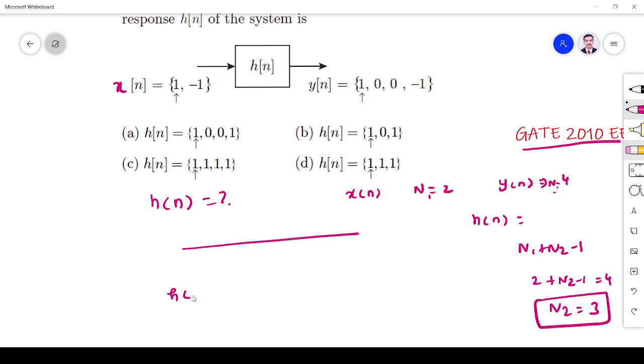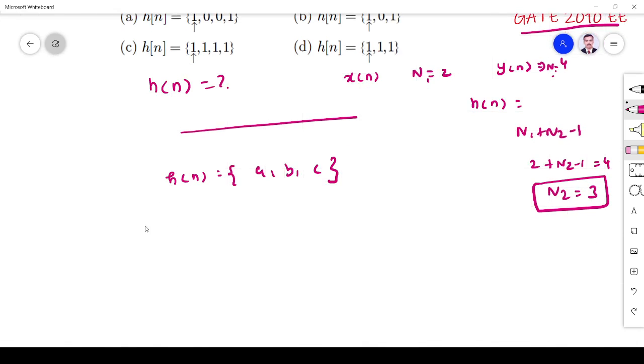So I assume h[n] is A, B, C. Now we know y[n] is equal to x[n] convolved with h[n]. I do the convolution. The simple convolution is...